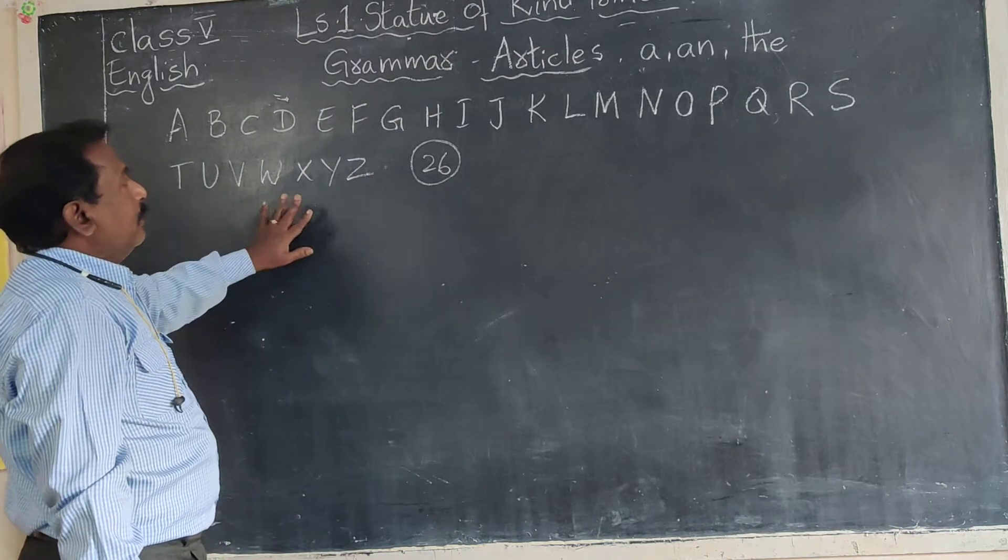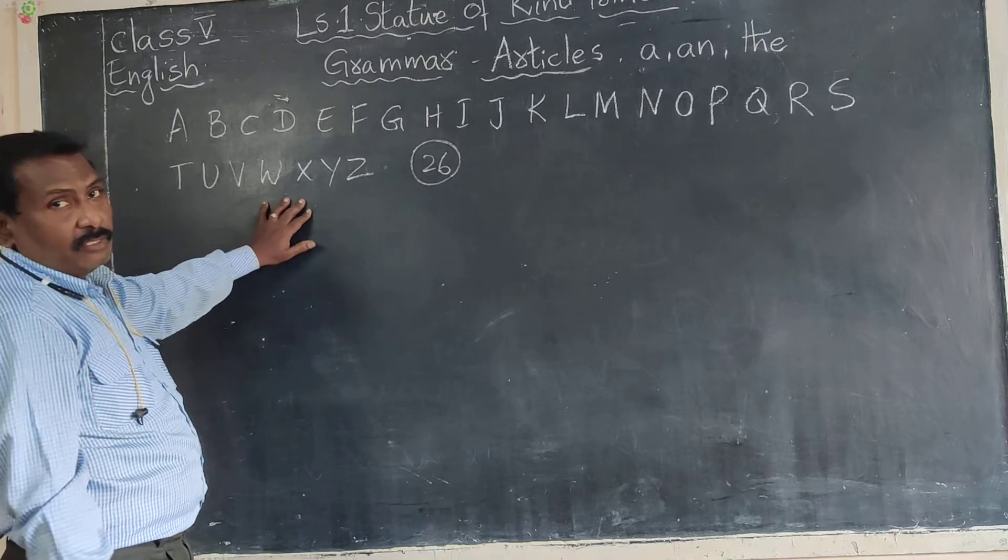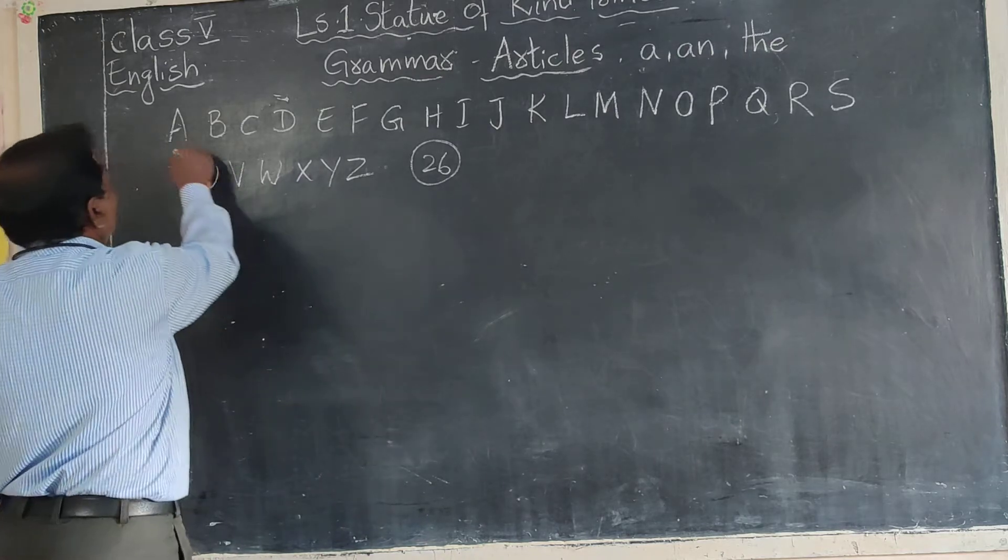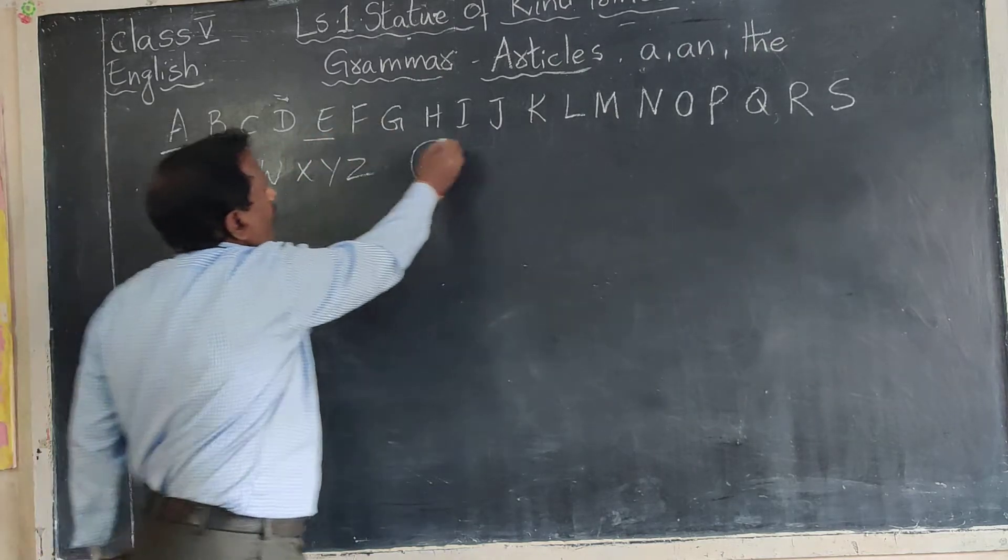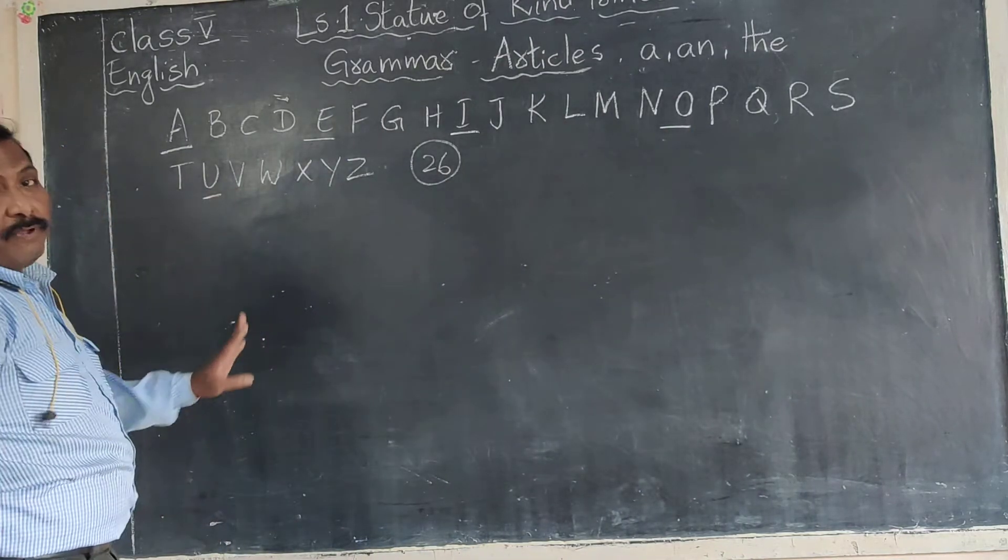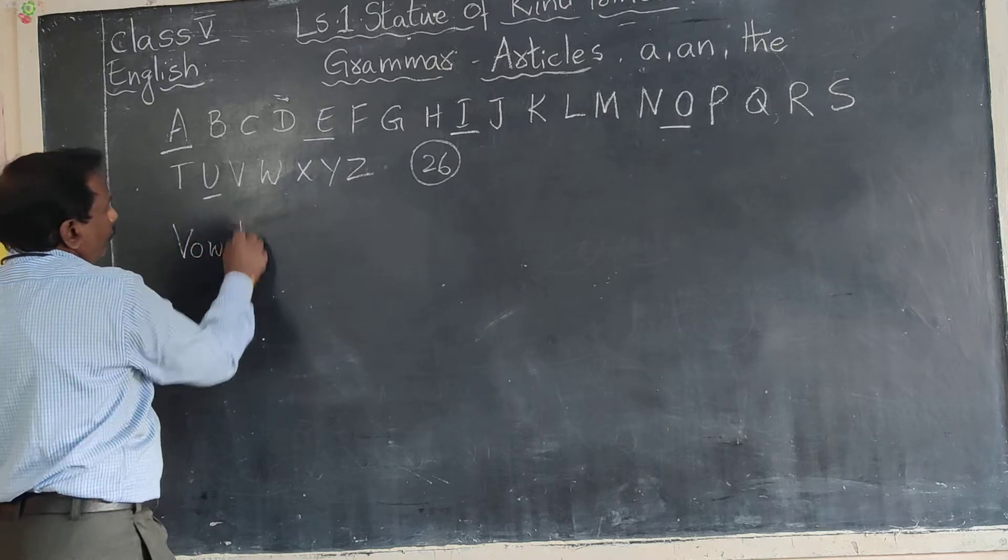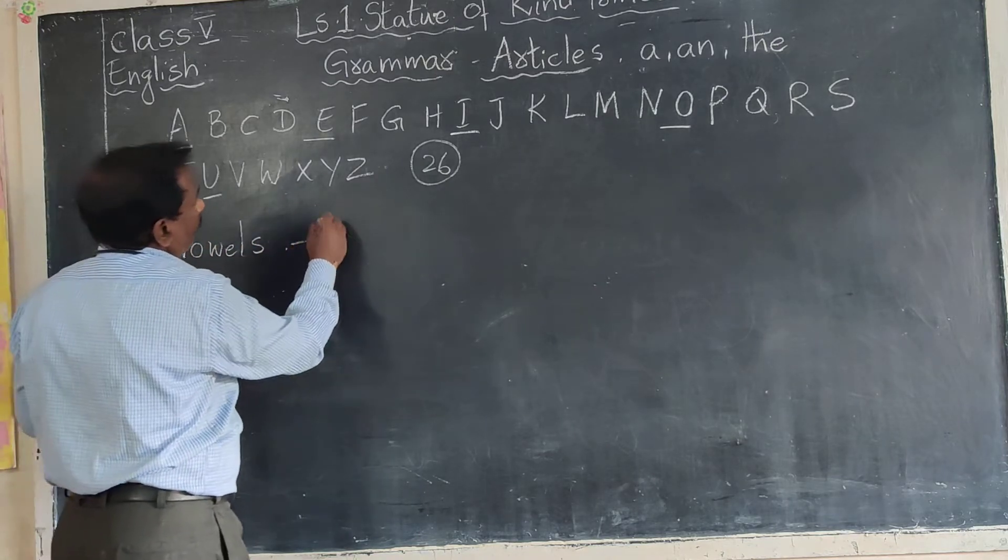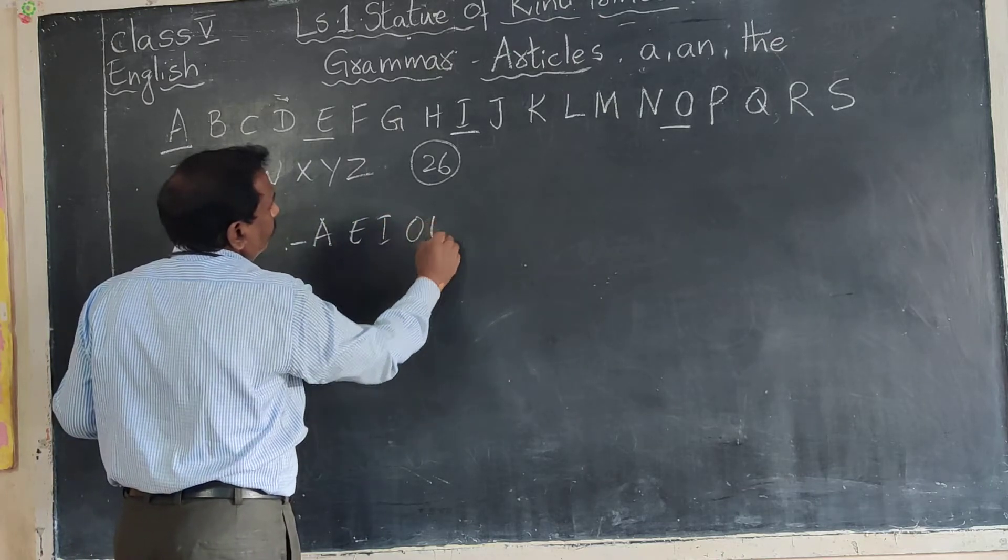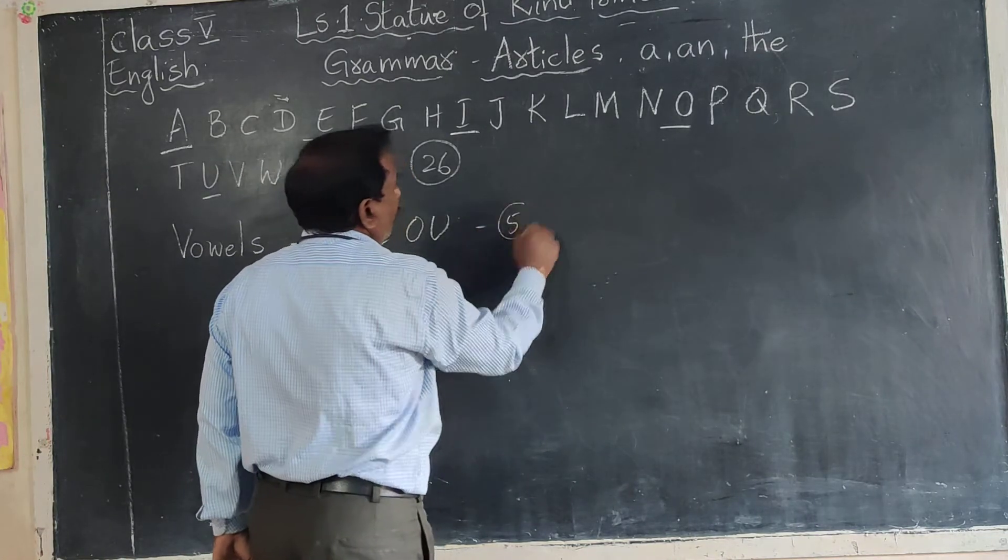Twenty-six letters are there in alphabet. And these twenty-six are again divided into vowels and consonants. What are vowels? A, E, I, O, U. These five letters we call as vowels.